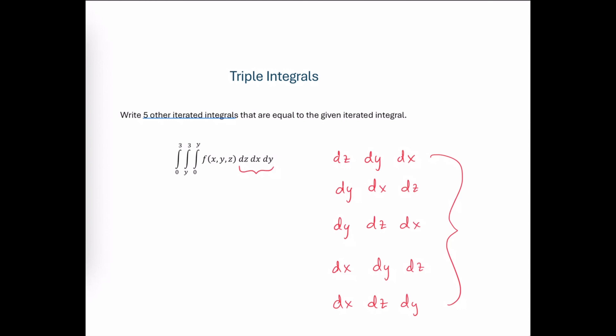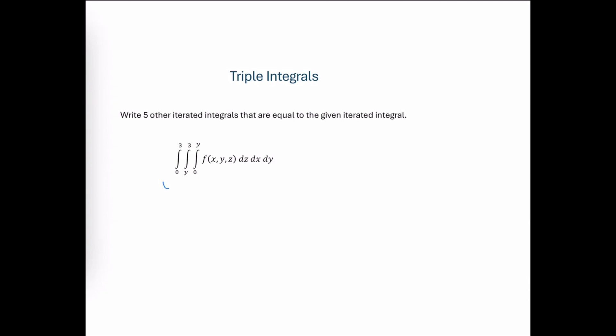Each one of these orders of integration is going to have its own unique set of limits, so we need to figure out what the limits are going to be to correspond with each of these particular orders. In order to do that, we need to essentially graph the 3D domain, and that's going to help us determine the new limits for each of those new orders.